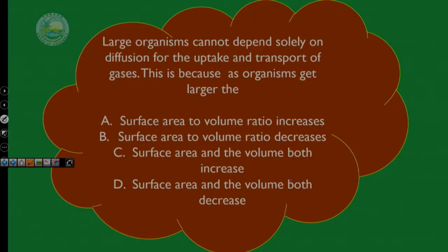Large organisms cannot depend solely on diffusion for the uptake and transport of gases. This is because as organisms get larger, the surface area to volume ratio decreases. This is the one we did with the boxes or the cubes. So the answer is: as the organism gets larger, the surface area to volume ratio will decrease. You would have more volume than surface.